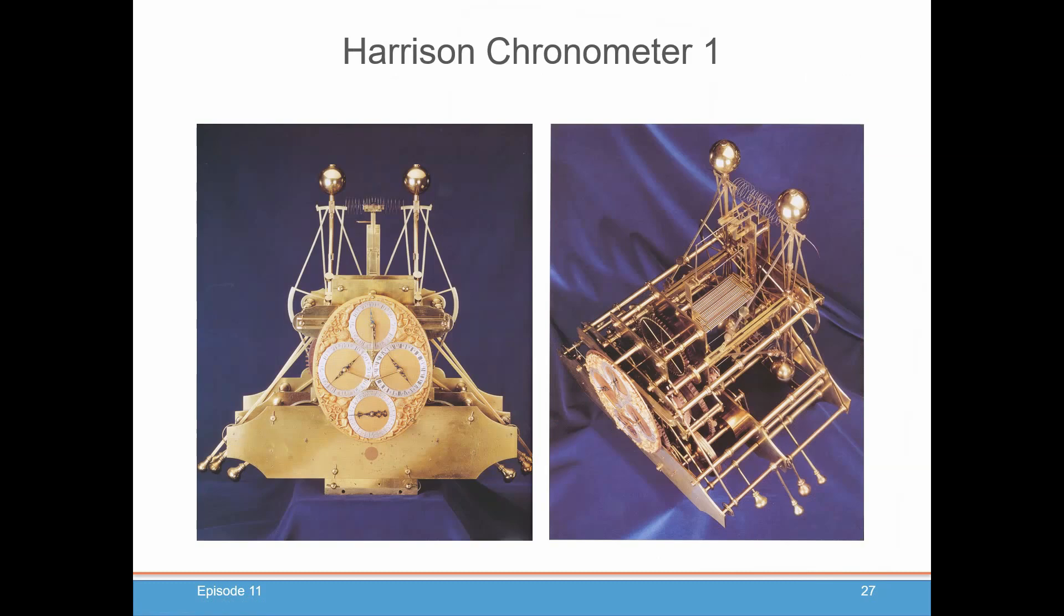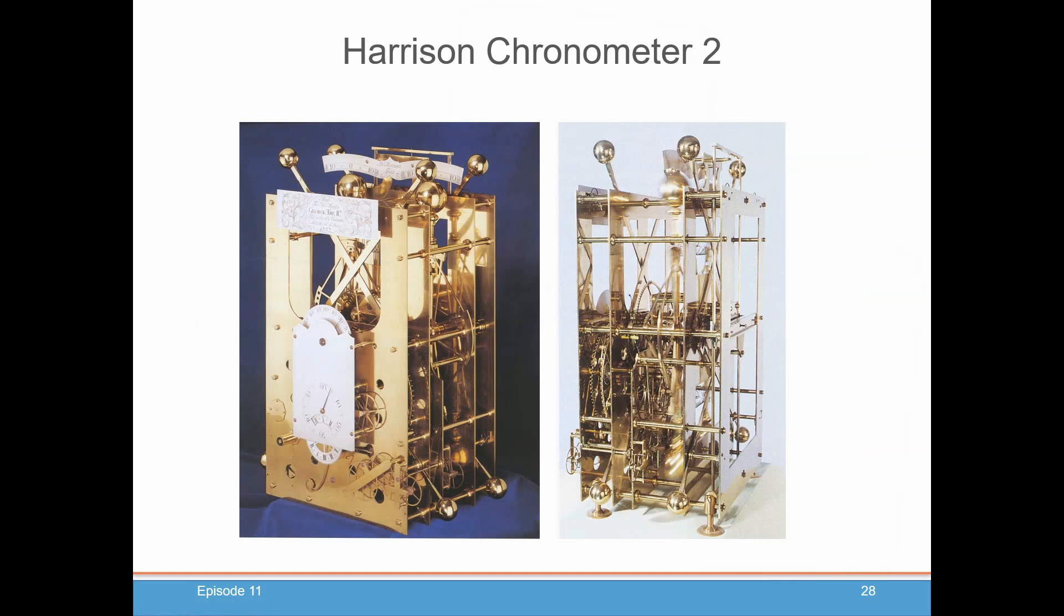Harrison made a couple of different chronometers. Obviously, all of these things had to work at sea on a pitching and rolling boat. And that turned out to really be the difference between the astronomer's solution and Harrison's solution. He had made chronometer number one. Chronometer number two, from what I understand, did actually go to sea and worked very well. But as you can see, it was very large and cumbersome. It was more like a prototype.